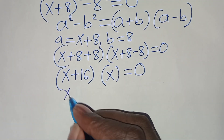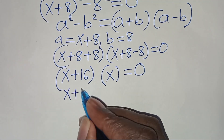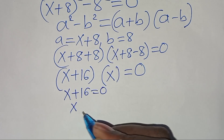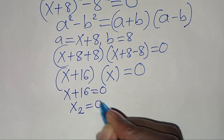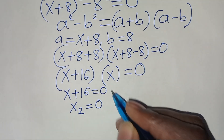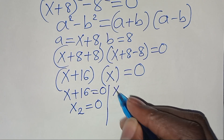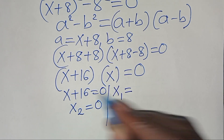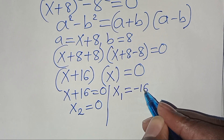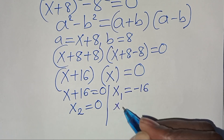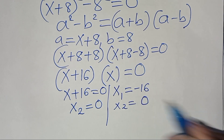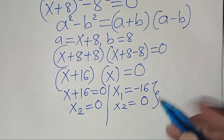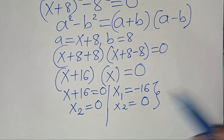That means we have two parts: x plus 16 equals 0, and x equals 0. So we have two possible values of x — x1 is equal to negative 16, and x2 is equal to 0. These are the values of x from Method 1.